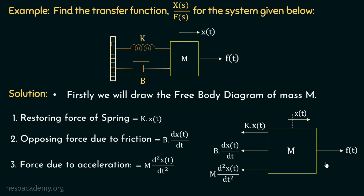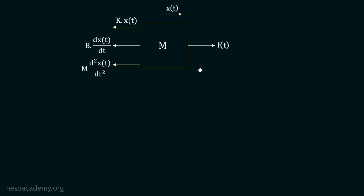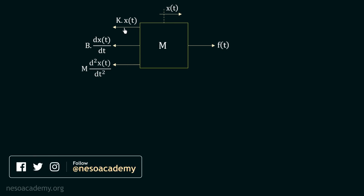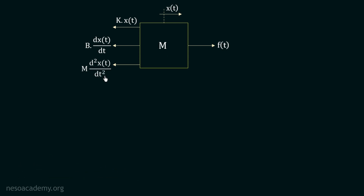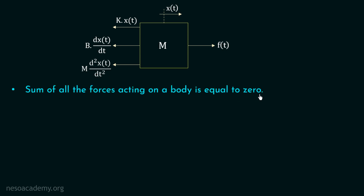We will now use this free body diagram to calculate the equation of motion. This is the free body diagram we created: the applied force f(t) is to the right hand side, causing displacement x(t) to the right hand side, and there are three opposing forces. The first is the restoring force of the spring k·x(t), the second is the opposing force of friction b·dx(t)/dt, and the third is the opposing force due to acceleration m·d²x(t)/dt². According to Newton's law of motion, the sum of all forces acting on a body is equal to zero. So the sum of all four forces acting on this body is equal to zero.